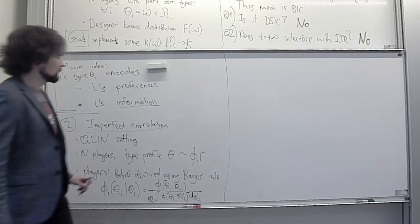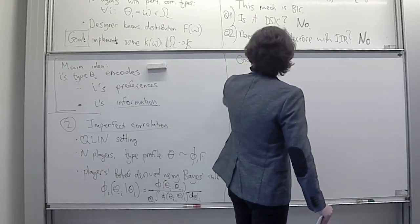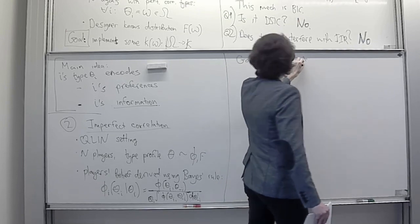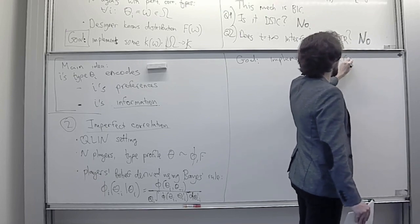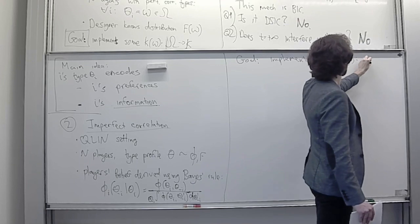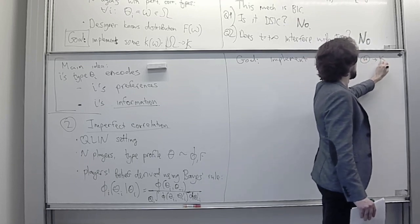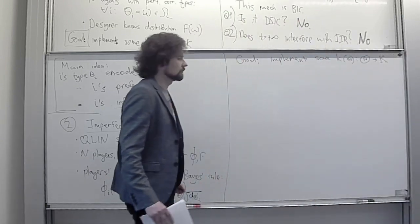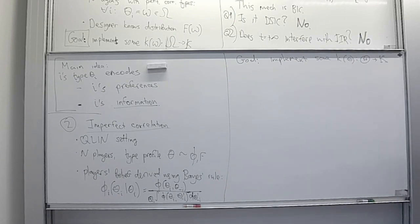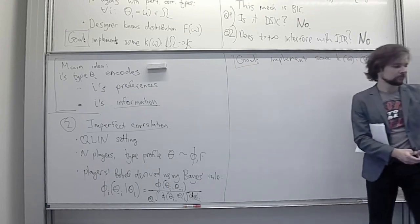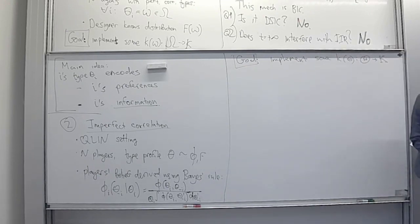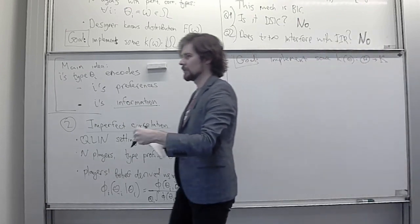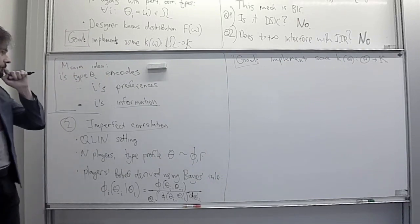The goal is the same as before: we want to implement some allocation rule k(theta), which maps type profiles into outcomes. Implementing means finding the transfer rule that supports this allocation. By the laws of narrative symmetry, we will be able to implement an arbitrary allocation rule and find such transfers even with imperfect correlation between different players' types.